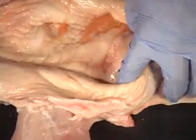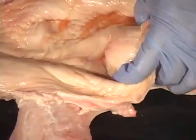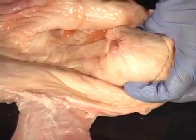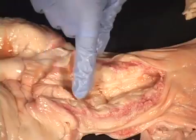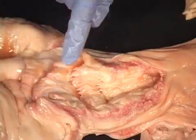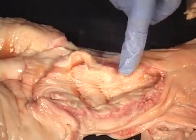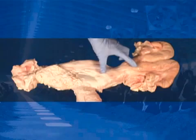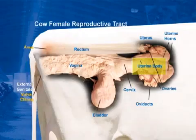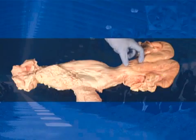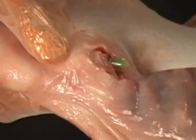Cervix: it is located between the vagina and the body of the uterus. It is made up of fibrous tissue which is dense and hard to palpation. The inner side presents folds with a spiral form and it is approximately two to five inches in length and two inches in diameter. Body of the uterus: located anterior to the cervix, this structure is the place where the semen should be deposited — the target site.